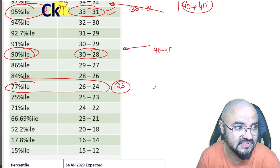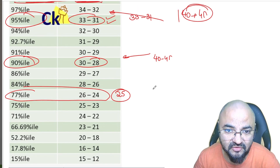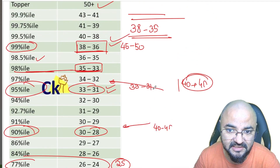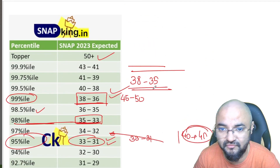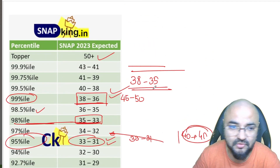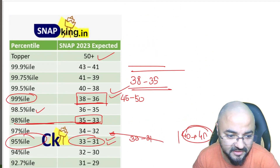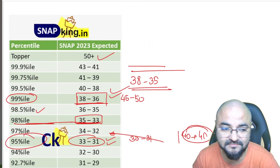So this is the tentative cutoff which I can see for SNAP Slot 1 and Slot 2 combined.